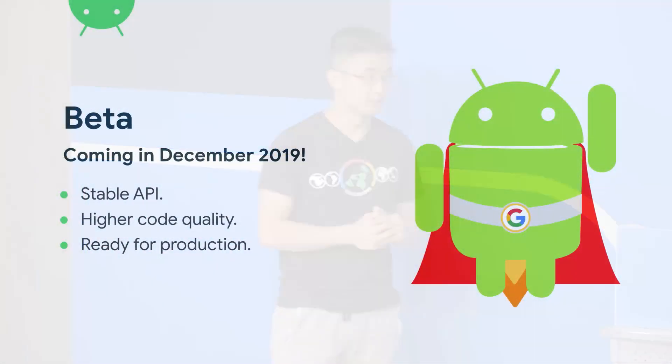I also have good news to announce today. In the coming December, we are going to launch the beta version of CameraX. This is truly a big step forward. Being in beta means two things: first, the API will be more stable — you will see fewer API changes once it's in beta. And second, the code quality will be held to a higher standard, which means it will be less buggy and more tested. Overall, it means it's ready for production. We already have internal adoption, like Google Lens. So if you're also considering migrating to CameraX, this is a good time.